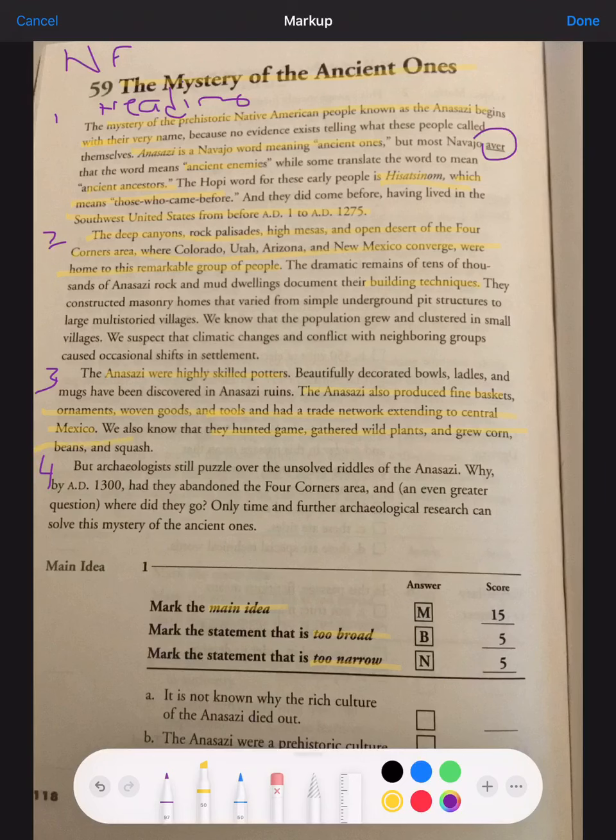But archaeologists still puzzle over the unsolved riddles of the Anasazi. Why, by AD 1300, had they abandoned the Four Corners area? And an even greater question, where did they go? Only time and further archaeological research can solve this mystery of the ancient ones.